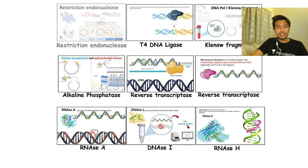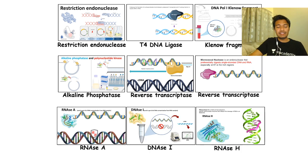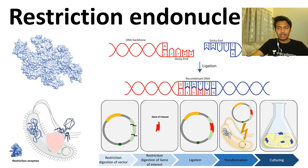So first we are looking at restriction endonucleases, then T4 DNA ligase, DNA Pol I Klenow fragment, alkaline phosphatase, polynucleotide kinase, reverse transcriptase, RNase A, DNase I, RNase H, etc. This is the overall thing we are going to cover in the next 20 minutes. Let's start — you guys are ready? Give me some responses in the chat.